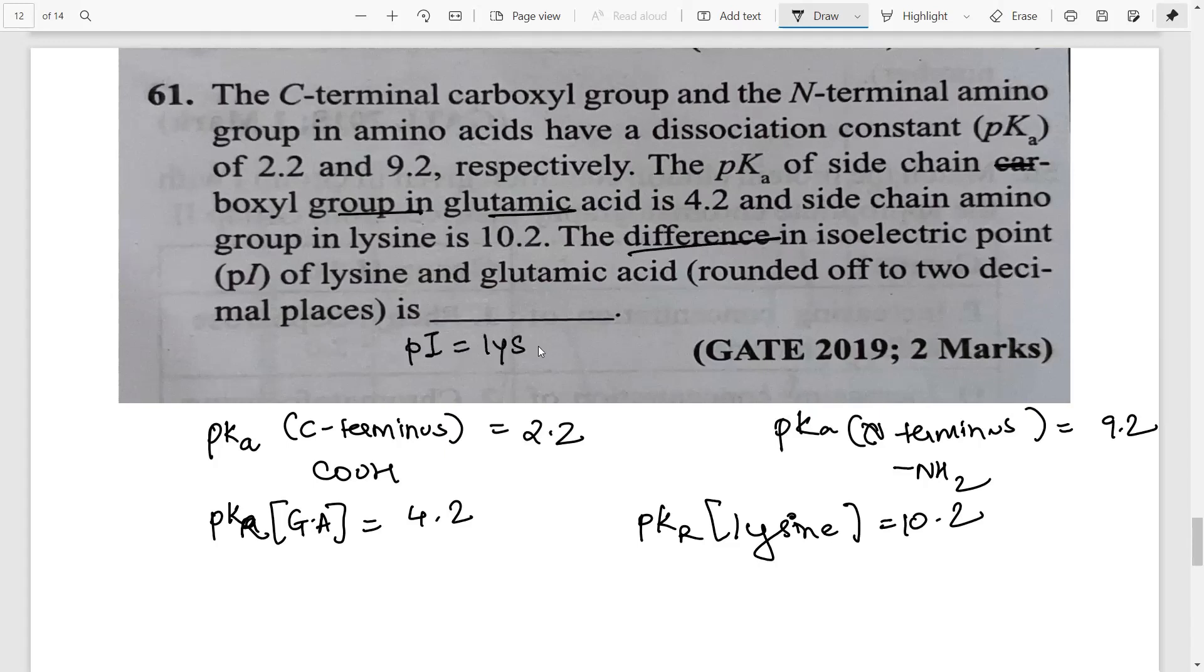So you have to do pI of lysine minus the pI of glutamic acid. So individually first find out. So pI of lysine we just saw how will you calculate the pI for lysine will be the R group that is 10.2 plus what will be the next one, it will be the other positive charge group that is the N terminus group that is 9.2. Add both of them what value you will get calculate it see the answer.